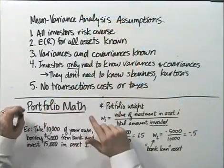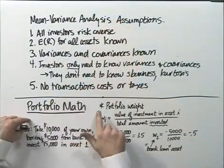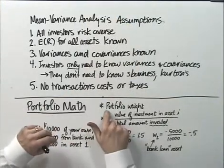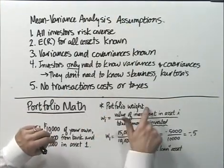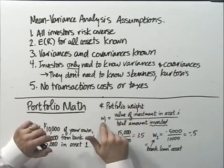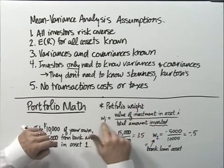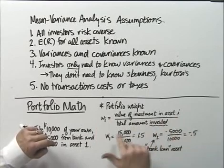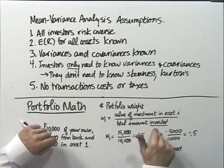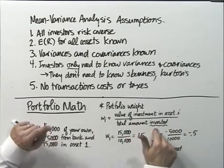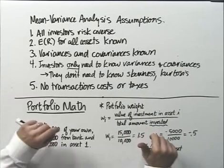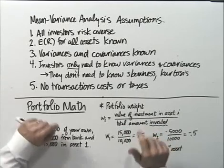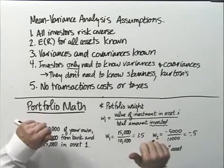The first concept in portfolio math is the concept of a portfolio weight. I like to define a portfolio weight, W_i, as the value of the investment in asset i divided by your total amount invested. I know that's different from the way that some people try to define portfolio weights, but I think it is a much more comprehensive definition.